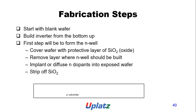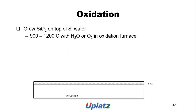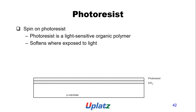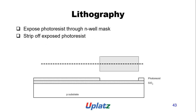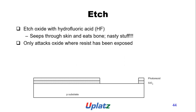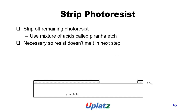The first layer is a P-type substrate. Next, oxidation forms SiO2 on top of the silicon. Photoresist is a light-sensitive organic polymer that softens when exposed to light. In lithography, expose photoresist through the N-well mask, then strip the exposed photoresist. Etch the oxide with hydrofluoric acid — a nasty substance that only attacks oxide where the resist has been exposed. Finally, strip the remaining photoresist using a mixture of acids called Piranha.